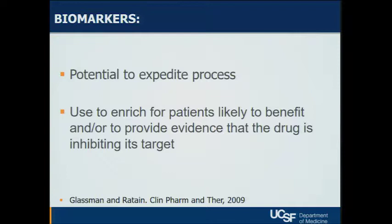Biomarkers might be one way to expedite the process, as various markers can be used to enrich the patient population. From a PRRT perspective, we're looking for somatostatin receptor expression, which you can assess from somatostatin scintigraphy or DOTATOC scans. In some cases it's a mutation-based biomarker, or it might be a marker on the tissue — some immunotherapy studies require certain biomarkers to be present. This can really enrich your patient population for those most likely to respond, but only if you've chosen the right biomarker, which has been a challenge for many drugs.